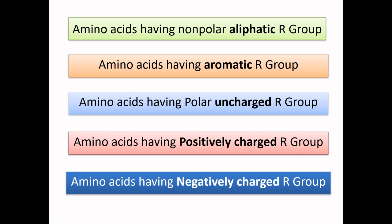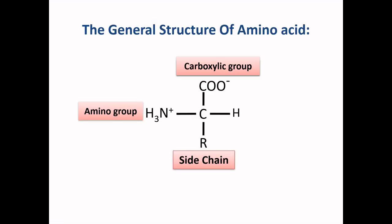Group 1 contains amino acids with non-polar aliphatic R group as the side chain. Group 2 contains amino acids with aromatic R group as the side chain. Group 3 contains all amino acids which are polar and uncharged. Group 4 contains amino acids with positively charged R group, and Group 5 contains all the negatively charged amino acids.